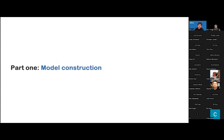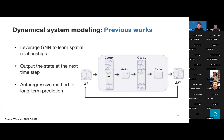Let's start with part one: model construction. We first introduce some prior work for dynamical system modeling. This work usually uses graph neural networks to learn the spatial relationship in dynamical systems. In particular, they feed the current state of all the objects into the graph neural network and output the differences at the next time step. Then they feed the output back to the input and use the autoregressive method for long-term prediction. However, the underlying dynamic evolution could be continuous, but these works are discrete.